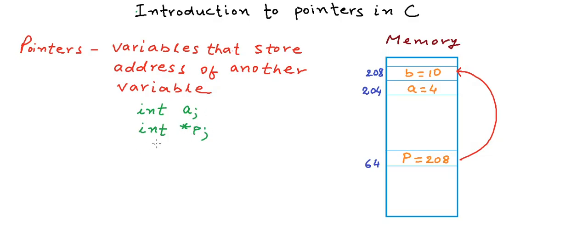Now to store the address of A in P, we need to use a statement like P is equal to ampersand A. Now if we put ampersand in front of a variable, it gives us the address of that particular variable. In fact it returns a pointer to that particular variable. Okay, so let's try to see a simulation of this. Let's say when we declared the variable A, then it was allocated an address 204.